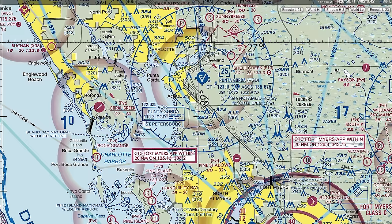The field elevation at Punta Gorda is 26 feet above sea level. The airport has lights, but there's a star next to the L meaning lighting limitations exist — the lights turn off, and to turn them back on you click your mic three, five, or seven times within five seconds on frequency, making that pop-pop-pop sound. Three clicks for low intensity, five clicks for medium, seven clicks for high.